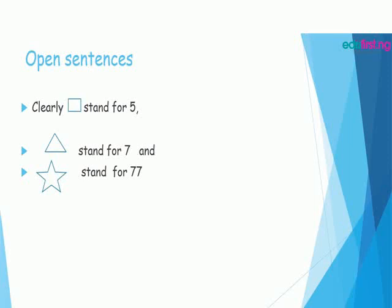Clearly, we understand that rectangle stands for 5, triangle stands for 7, and star stands for 77.